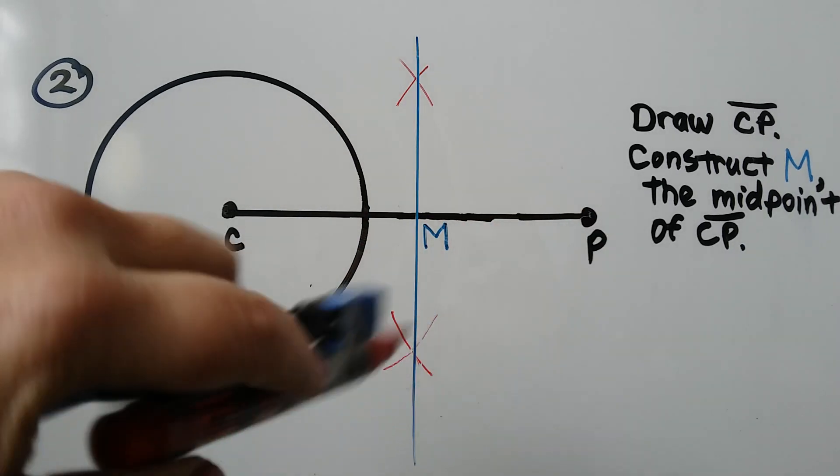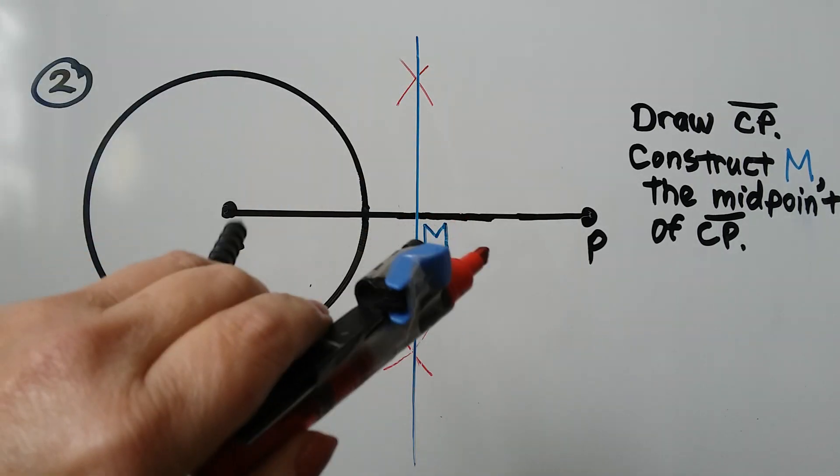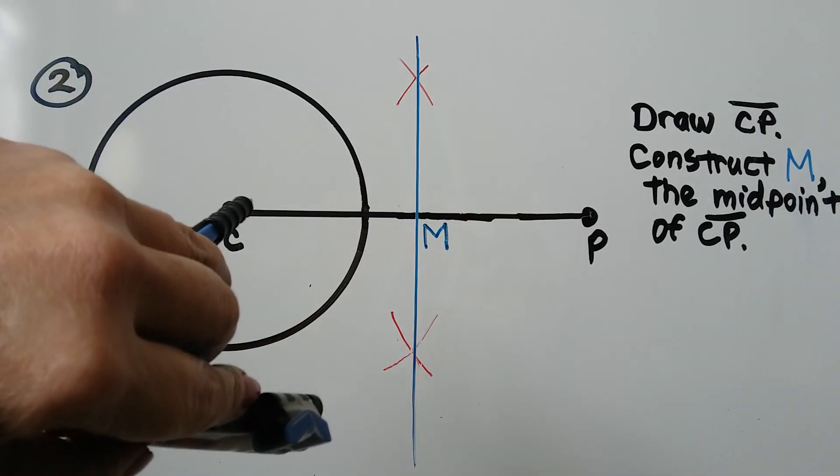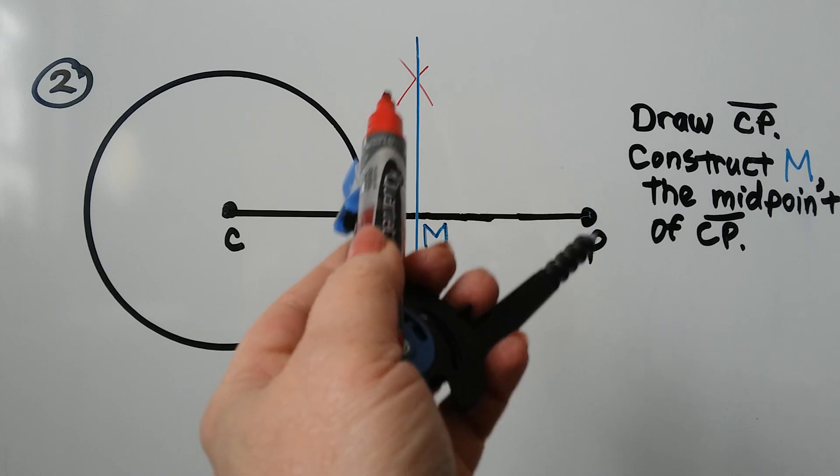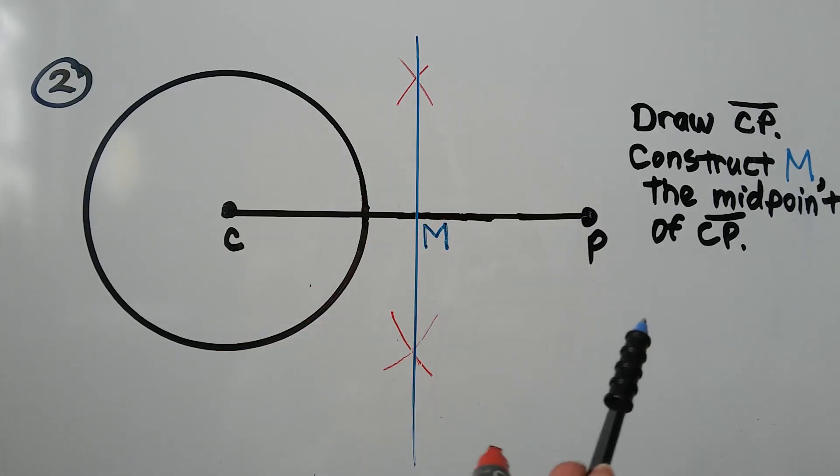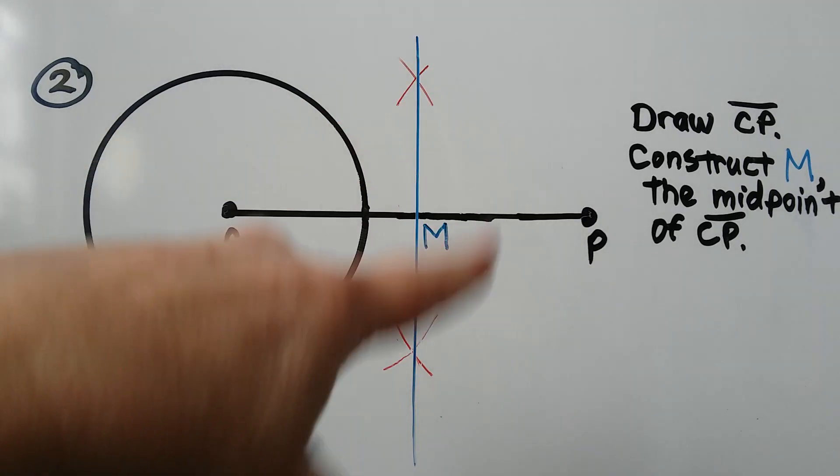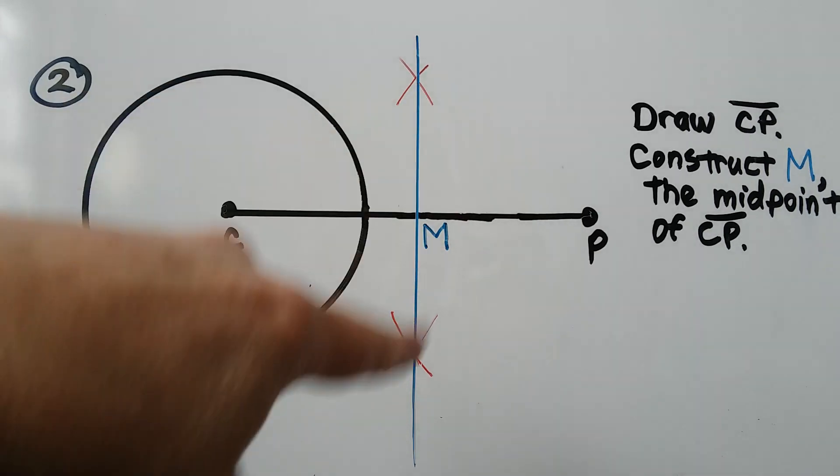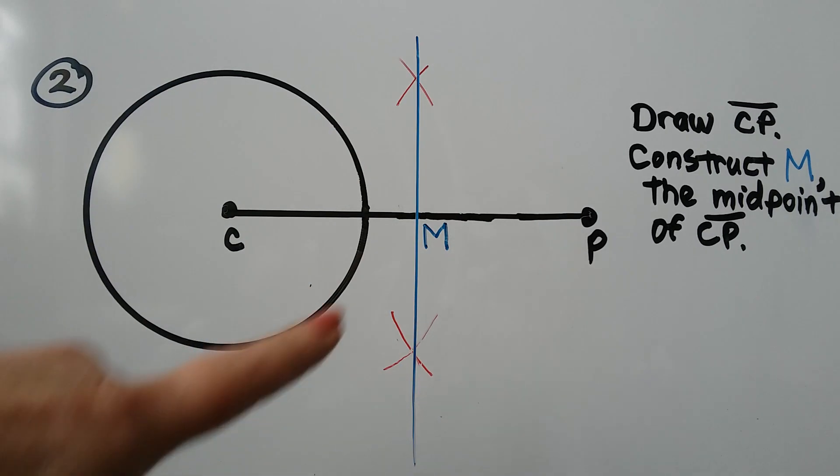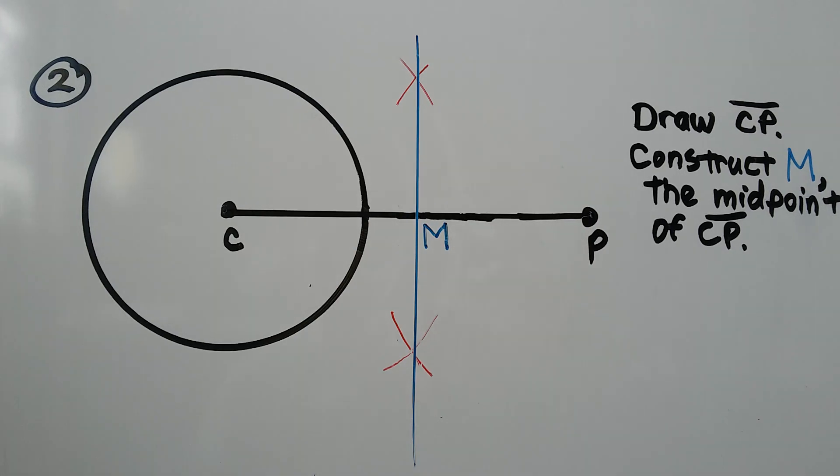And we can do it down here. You can actually make a very big arc going like this and make a very big arc from P going like that so that you'll have these arcs complete here. I just made little Xs. And this is going to be the midpoint. That's M.